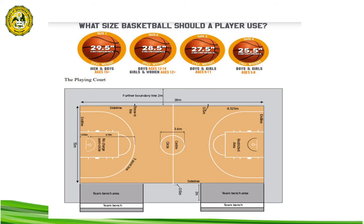The size of the basketball is also regulated for men, women, and different age brackets. For men, the official ball is 29.5 inches in circumference and weighs 22 oz. For women, the official basketball size is 28.5 inches in circumference and weighs 20 oz.